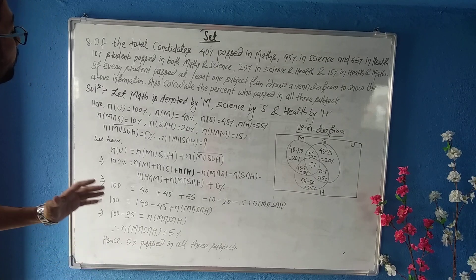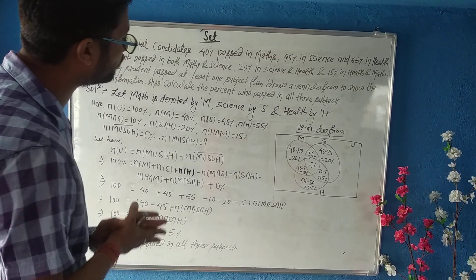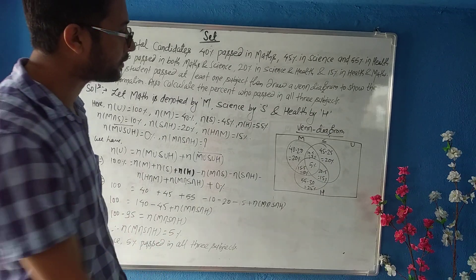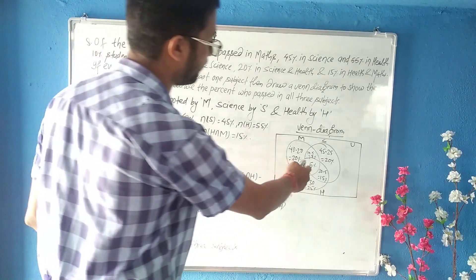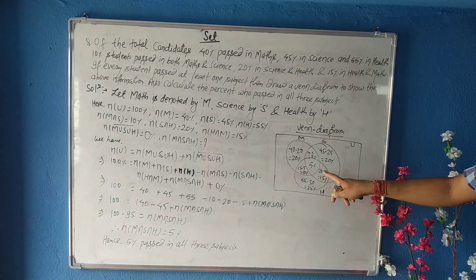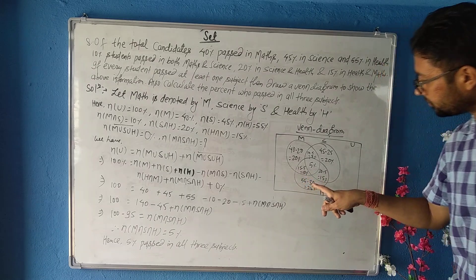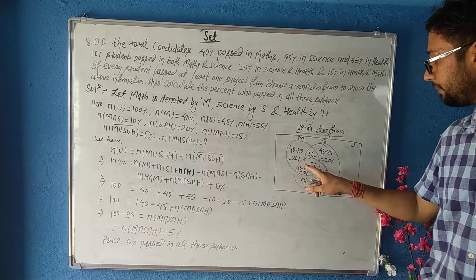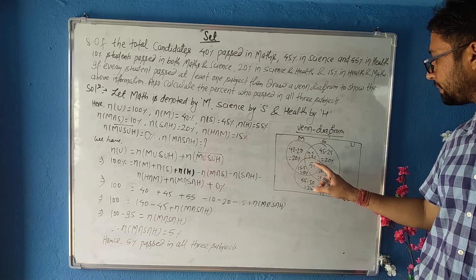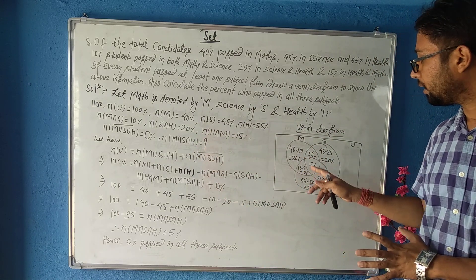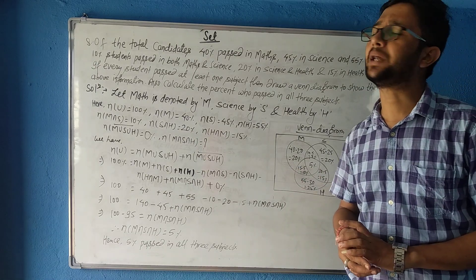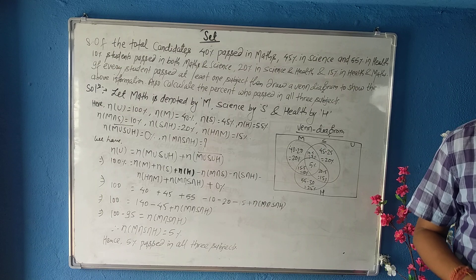Now represent this in the Venn diagram. M∩S∩H = 5%, placed in the middle. M∩S only = 10 − 5 = 5%. S∩H only = 20 − 5 = 15%. H∩M only = 15 − 5 = 10%. n(M) only = 40 minus (5 + 10 + 5) = 20%. Similarly calculate S only and H only. This is another type of question solved by applying the formula.